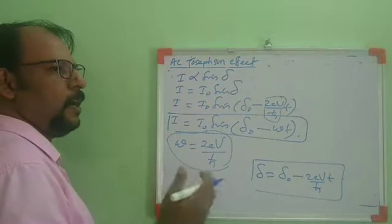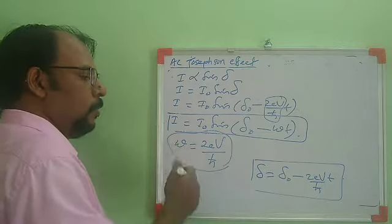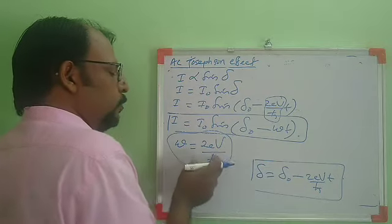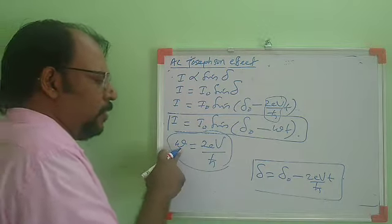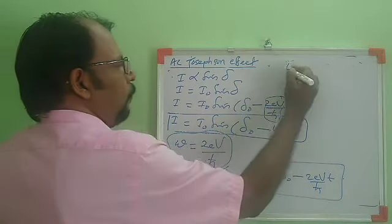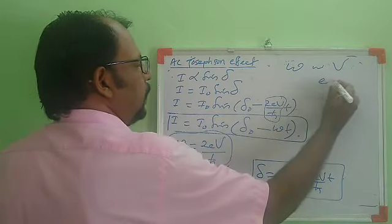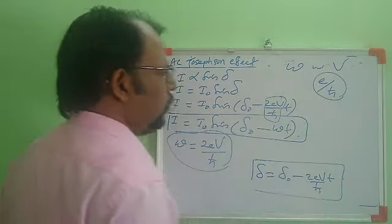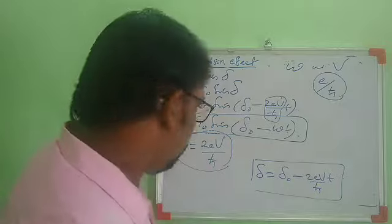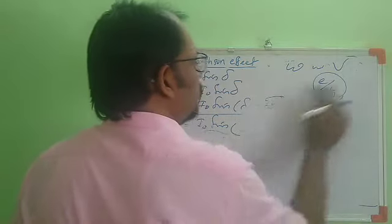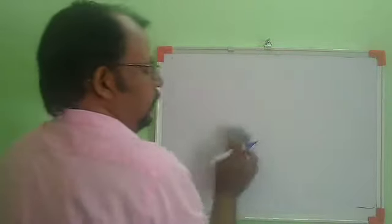The AC Josephson effect produces RF oscillations between the superconductors, emitting photons of frequency 2eV/ℏ. By measuring the frequency of emitted photons and the applied voltage, we can calculate an accurate value of e/ℏ using this equation. This principle is also used in constructing sensitive magnetometers.